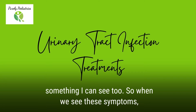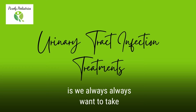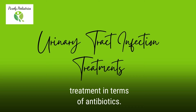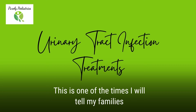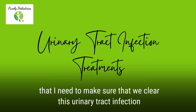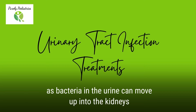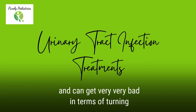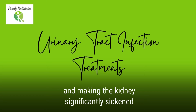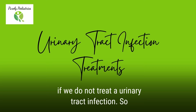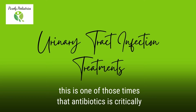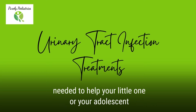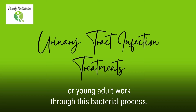When we see these symptoms, we always want to take treatment in terms of antibiotics. I need to make sure that we clear this urinary tract infection, as bacteria in the urine can move up into the kidneys and can get very, very bad — turning somebody septic with a blood infection and making the kidneys significantly damaged if we do not treat a urinary tract infection. Antibiotics is critically needed to help your little one or adolescent or young adult work through this bacterial process.